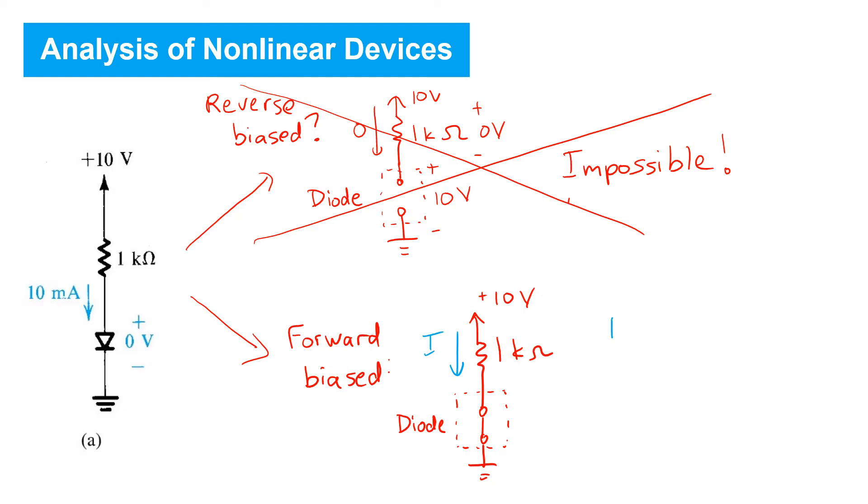It's simply given by Ohm's law for that resistor with a value of 1k. So, we see that assuming a forward biased diode current is flowing in the forward direction with a value of 10 milliamps. And that's consistent with our original assumption that the diode was forward biased. So this is the correct analysis using an ideal diode model.